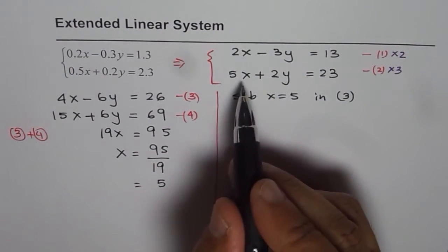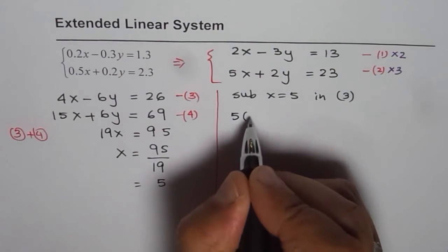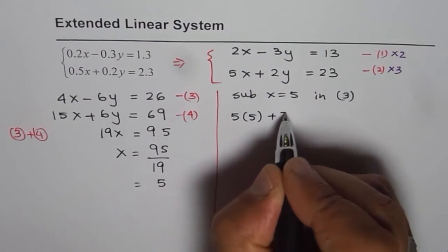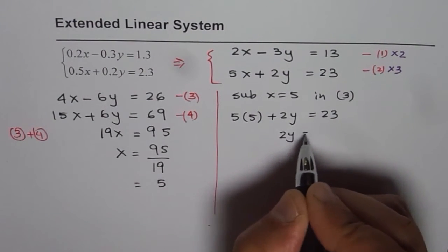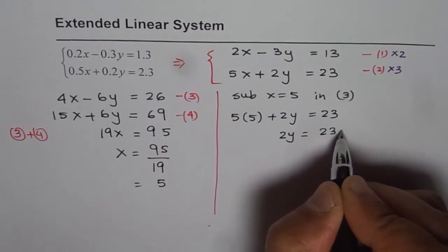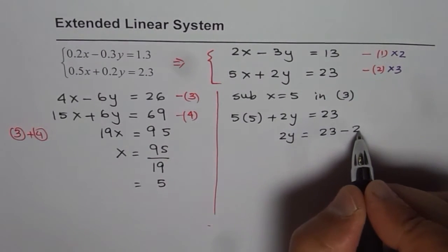So if I write x equals to 5 in equation 3, I get 5 times 5 plus 2y equals to 23. Or 2y equals to 23 minus 5 times 5 which is 25.